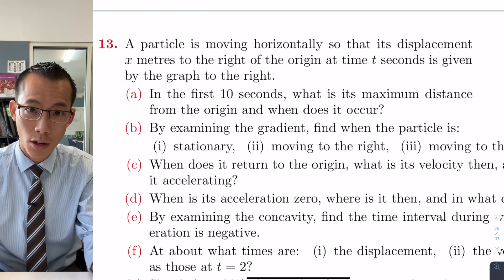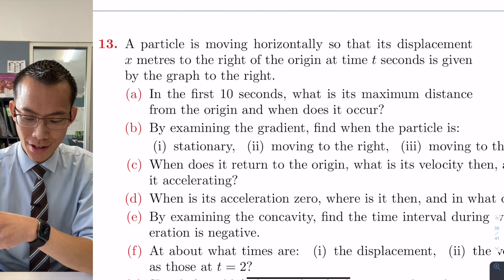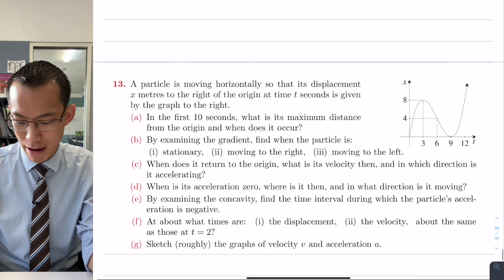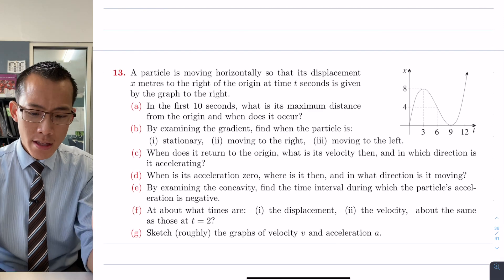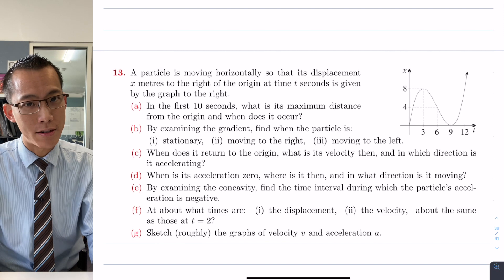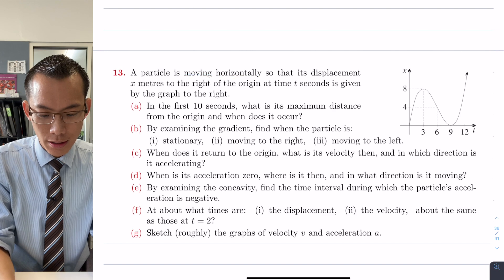It says a particle is moving horizontally so that its displacement x meters to the right of the origin at time t seconds is given by the graph to the right and that's the graph that you've got there. So immediately the first thing to notice here, which is kind of weirds you out and has some implications for the way you answer the question, is this particle is moving horizontally.